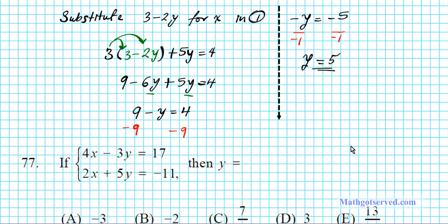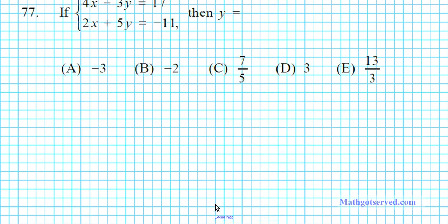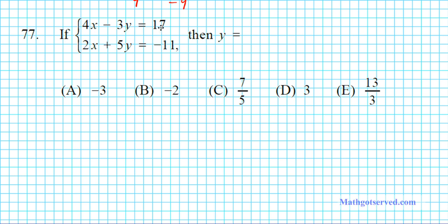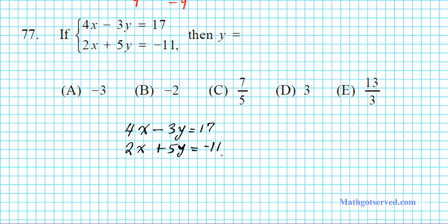Let's move on to problem 77. It says: if 4x minus 3y equals 17 and 2x plus 5y equals negative 11, then y is what? This is another system of equations problem. Let's write down our system: 4x minus 3y equals 17, and 2x plus 5y equals negative 11. Since both equations are in standard form, it's beneficial to use the elimination method to eliminate the variable we're not looking for. Since we're looking for y, we want to eliminate x.